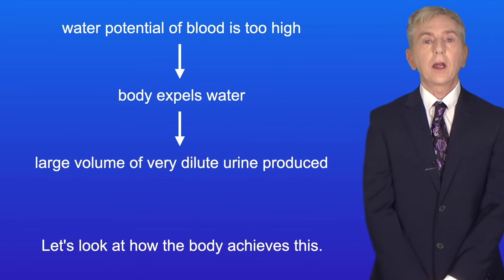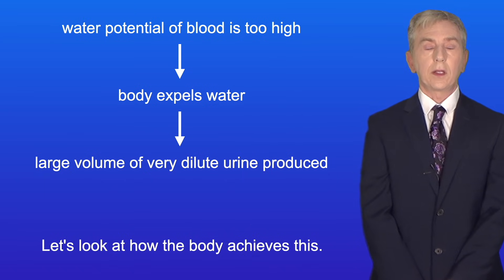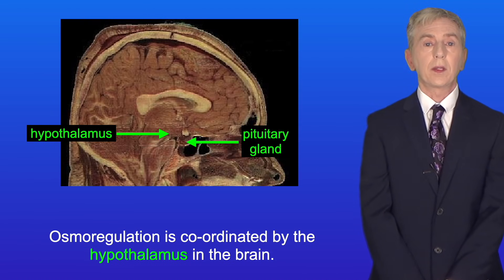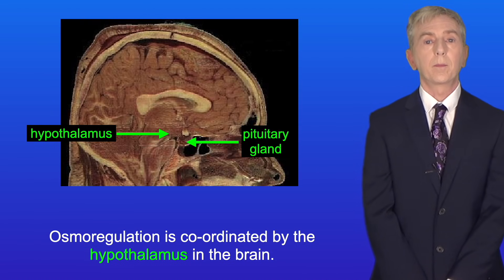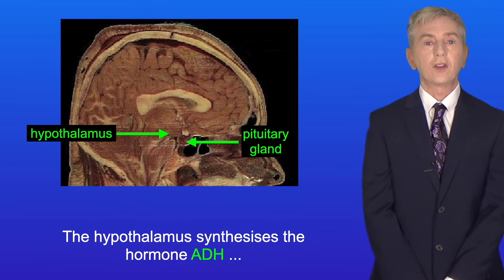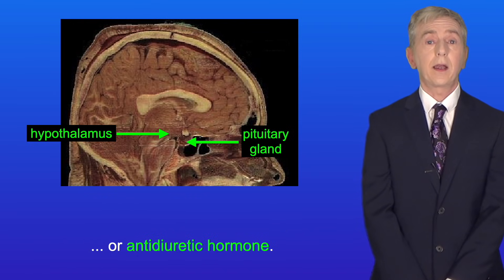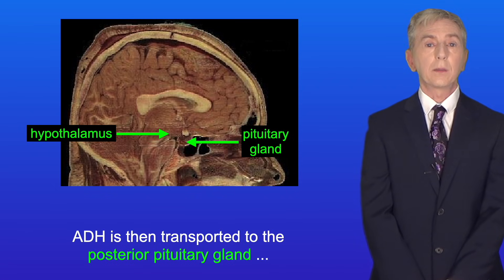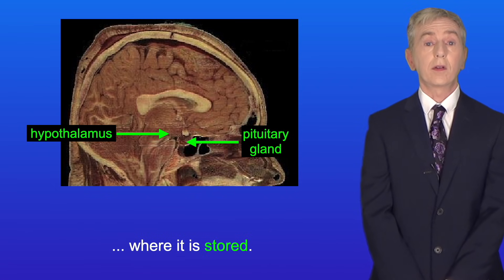So let's look at how the body achieves this. Osmoregulation is coordinated by the hypothalamus in the brain. The hypothalamus synthesizes the hormone ADH, or antidiuretic hormone. ADH is then transported to the posterior pituitary gland where it's stored.